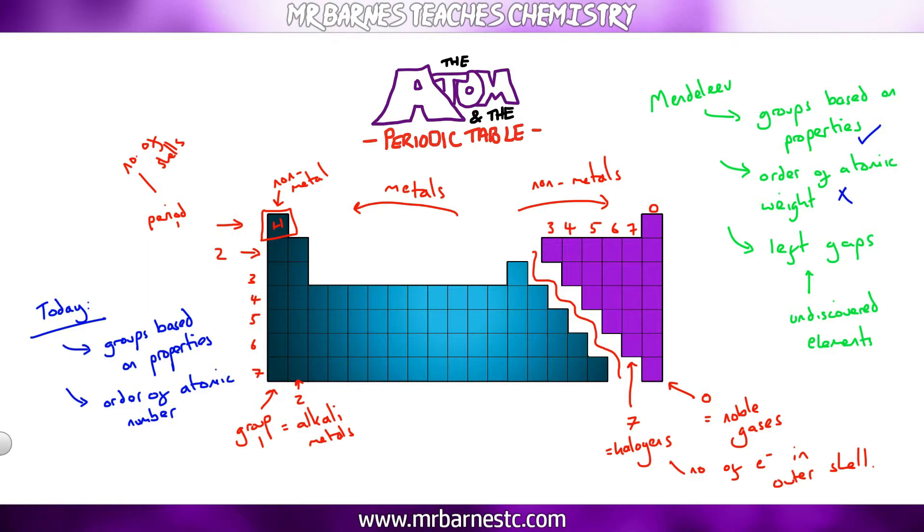And then the final thing Mendeleev could do when he left gaps, he would look at the elements above and below in the periodic table. So for example, if the element above had a melting point of 27 and the one below had a hundred degrees, he would be able to predict the properties of the undiscovered elements. So he would go, right okay, 27, 100, about halfway in between.